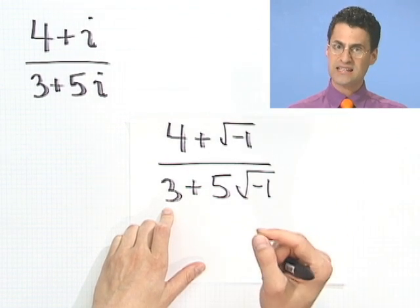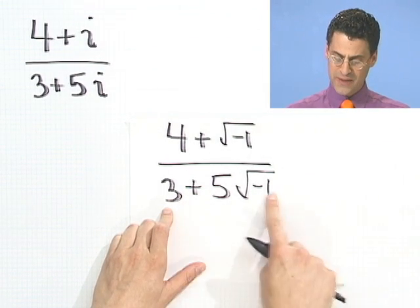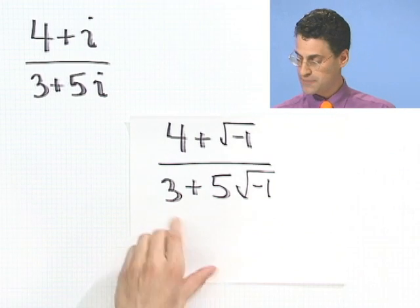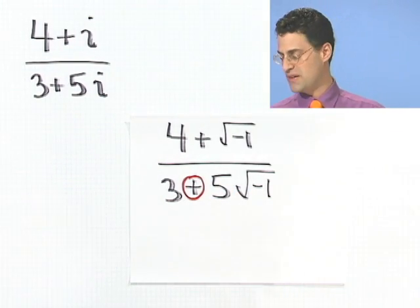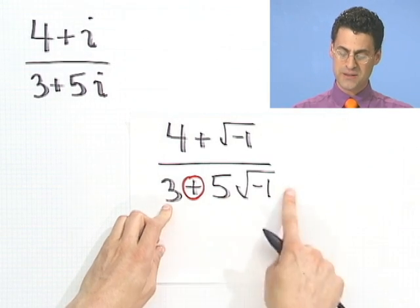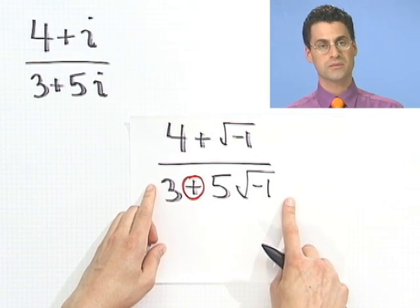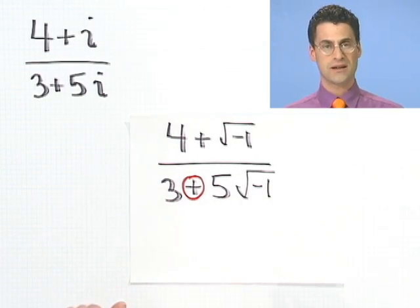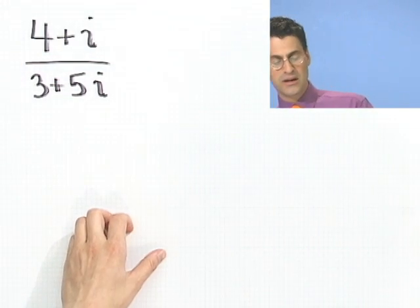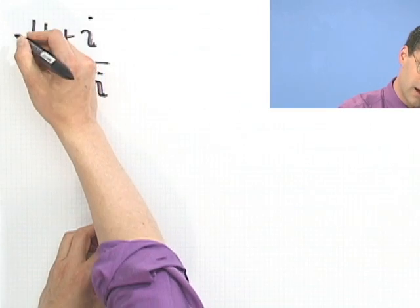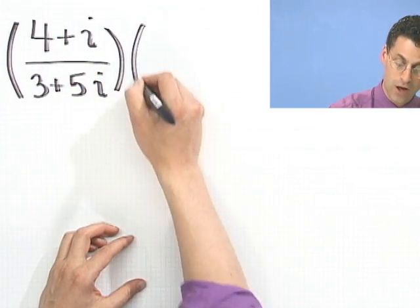And the conjugate is the exact same thing as it was before. The same thing as this number except this sign is changed. So if you multiply top and bottom by the conjugate, what happens is this becomes a good old-fashioned real number, as we'll see, because the inner terms will cancel out. So the trick in dividing complex numbers is going to be to multiply top and bottom by the conjugate of the denominator.